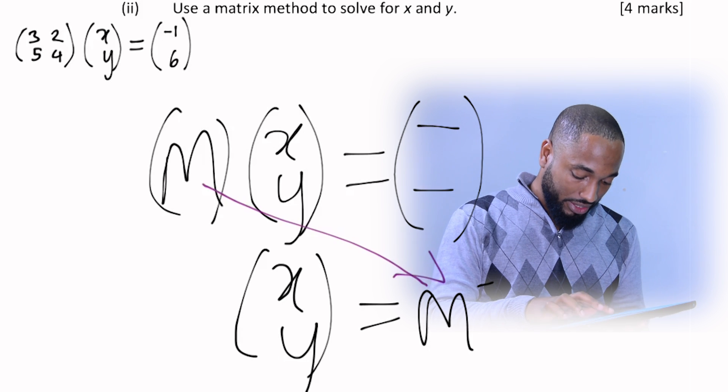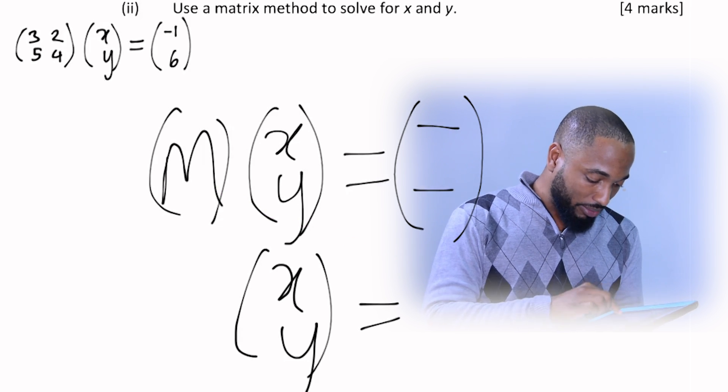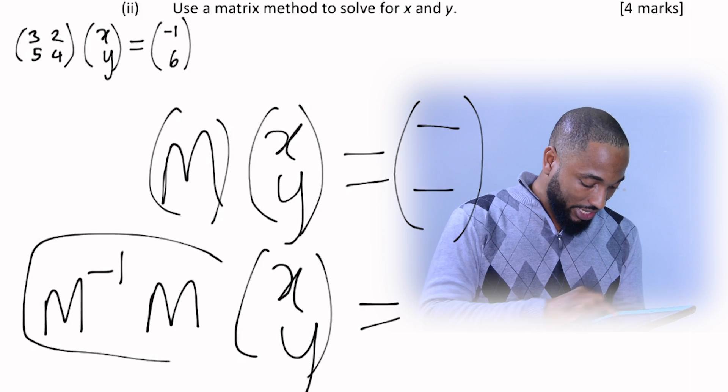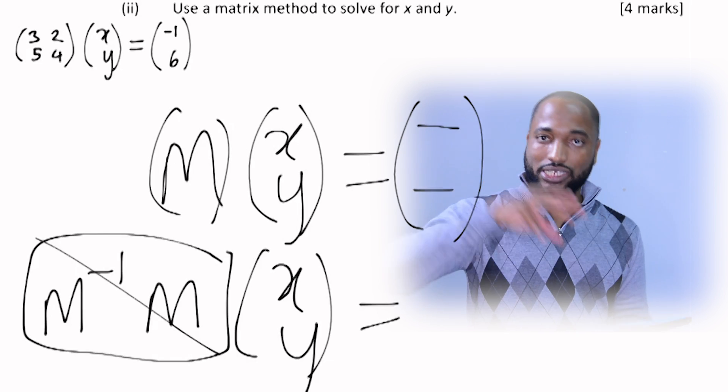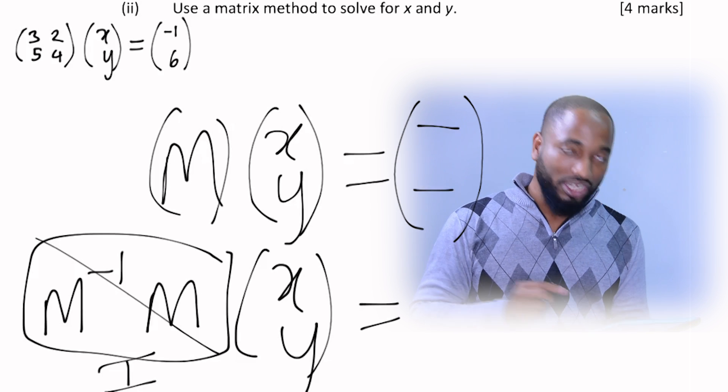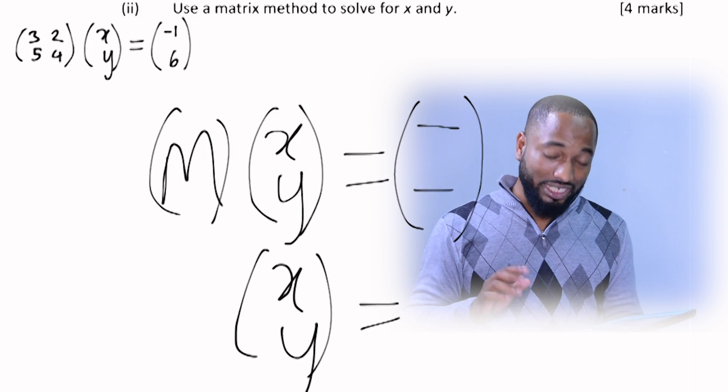Or another way to think of it. I just want to spend a little more time on this. If I'm multiplying by M inverse here by M, this cancels off the inverse by the actual matrix. M inverse by M is equal to the identity matrix, which is like one. That's like one in matrix language.